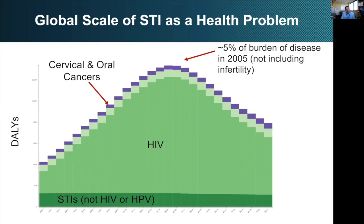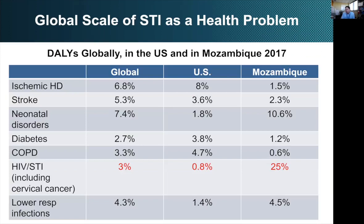The impact of HIV infection has declined roughly 45% since its peak — a huge public health triumph, though obviously not a complete victory and we have a long way to go. The influence of sexually transmitted infections varies dramatically around the world. In 2017, roughly 3% of all DALYs were attributable to HIV and STIs. You can see the dramatic difference between a country like the United States, where less than 1% of morbidity is attributable to HIV and STIs, versus Mozambique, where it's a quarter of all DALYs.